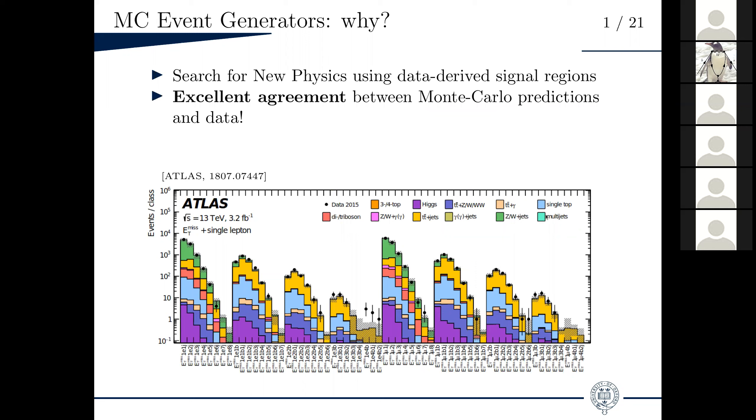As you probably know, typically theoretical predictions for particle colliders like the LHC rely on complicated programs that are called Monte Carlo event generators. I will take just one example of the success that the use of Monte Carlo generators has brought. Here's one plot from Atlas for a search for new physics, where Atlas identified hundreds of potential signal regions using data-driven approaches. They compare the number of events that are measured with the number of events that are predicted from Monte Carlo simulations in each of these regions. You see that the agreement is really good across basically all identified regions.